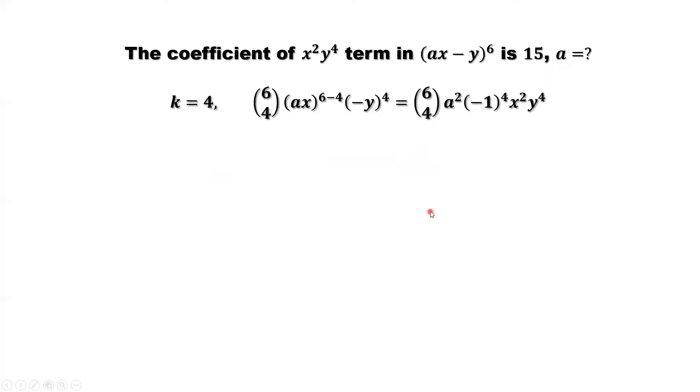Replace k by 4. We have here. We need to find this constant. This constant is the coefficient in front of x squared times y to the power 4.